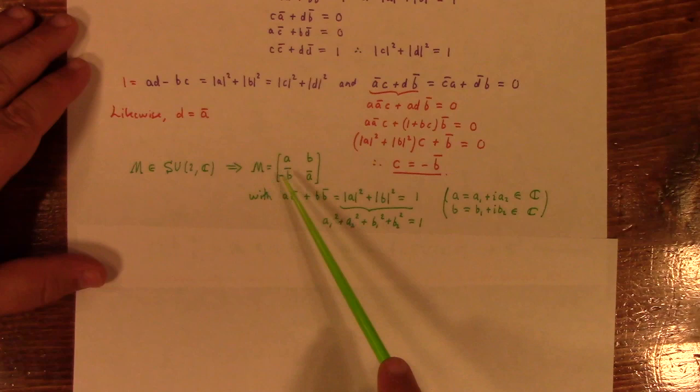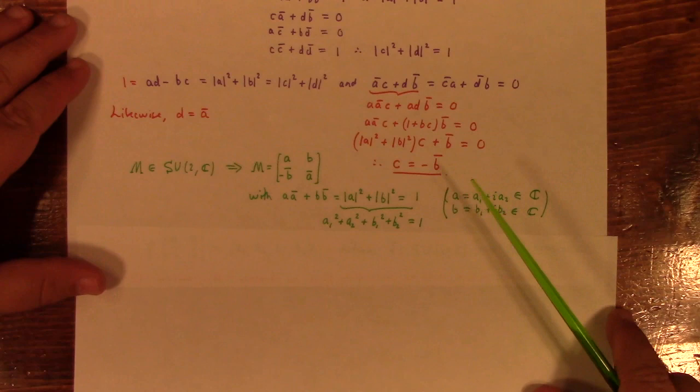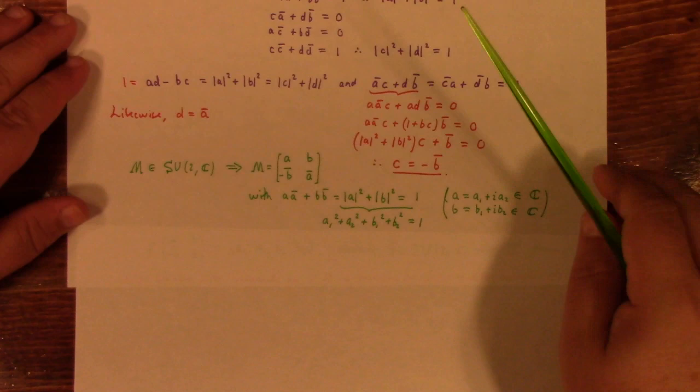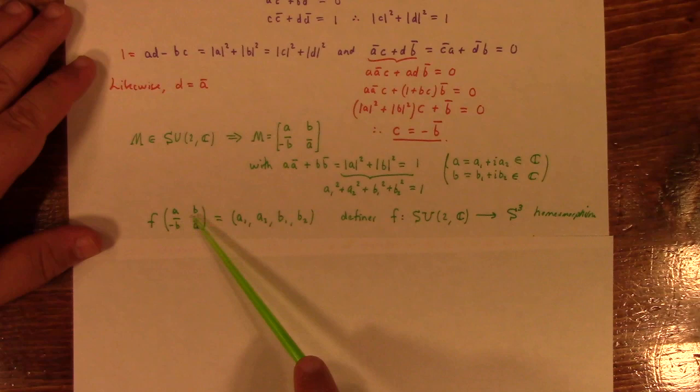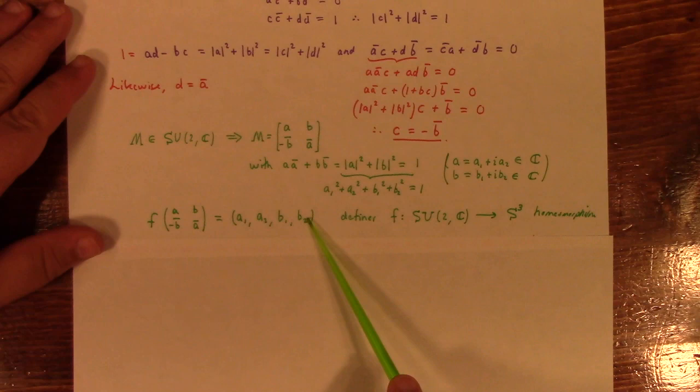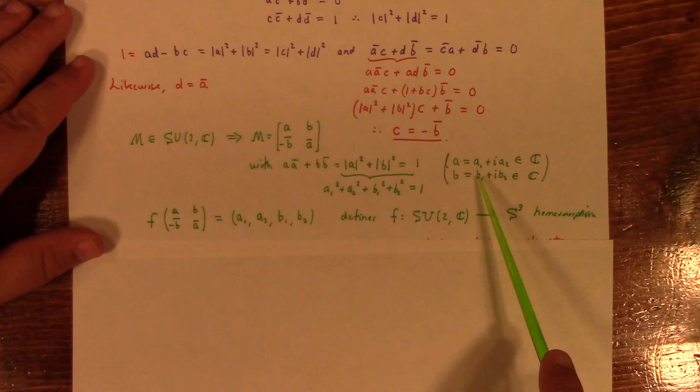So, when you put those back into your arbitrary matrix, you get A, B, minus B bar, A bar, like that. And so, that's the form of a special unitary matrix of a 2 by 2 size. And the neat thing, then, is if we define this function, F of A, B, minus B bar, A bar, equal to A1, A2, B1, B2. Where A1, A2, and B1, and B2 are the real and imaginary components of A and B separately. These are complex numbers. Remember, they break up into two real numbers, like so.